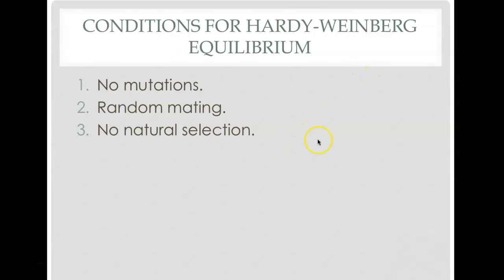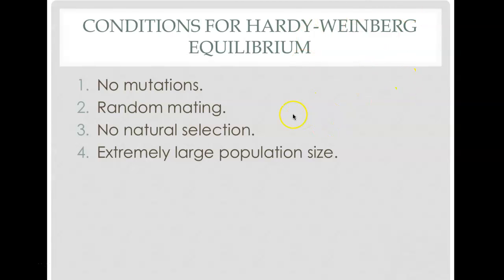The third condition is no natural selection — that isn't going to happen either. The fourth condition is an extremely large population size; that one can actually be met sometimes, but anytime you have a small population you can't be in Hardy-Weinberg equilibrium. The fifth condition is no gene flow, meaning no immigration or emigration — no outsiders coming in and no individuals leaving.